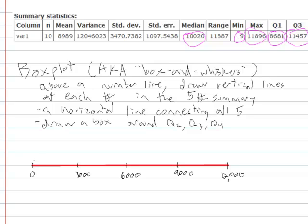Vertical lines at each of our five number summary. So, the minimum is 9. So, we're going to get a minimum almost at the 0 there. And Q1 was 8681, so that would be about 7,000, that would be about 8,000. So, Q1 is probably right about there. Q2, the median is 10,020. So, if that's 9,000, 10,000, 11,000, so 10,020, right about there. Q3 was 11,457. So, right about there. And the max was 11,896. Right about there.